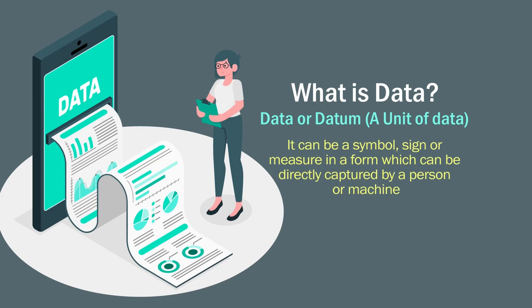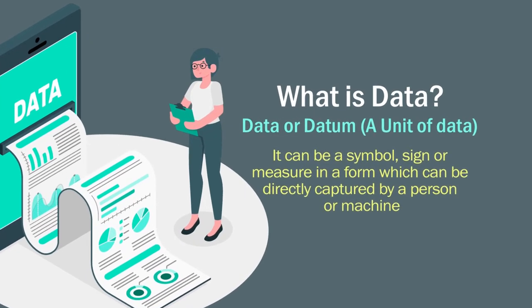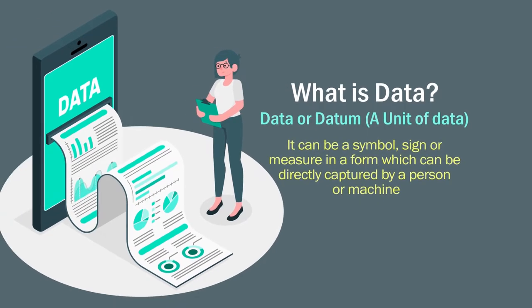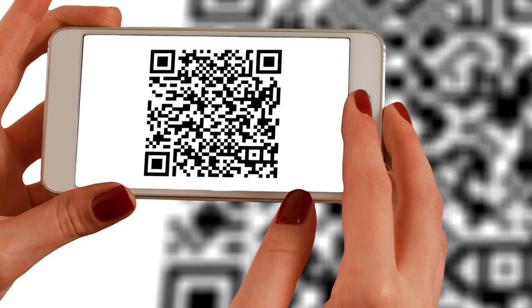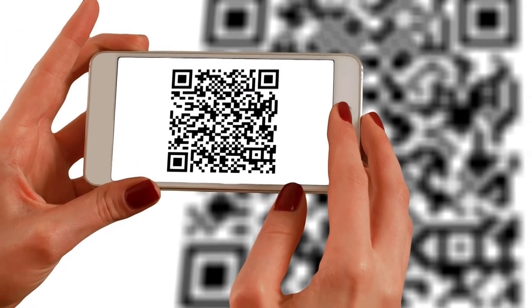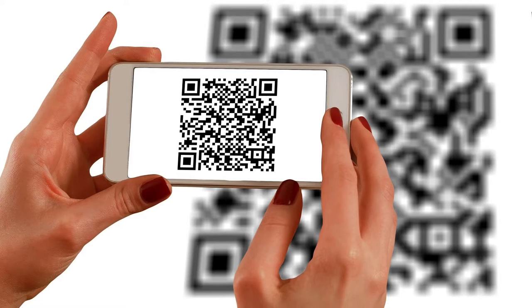Data can be a symbol, sign, or measure in a form which can be directly captured by a person or maybe a machine. For example, alphabets and numbers — and these days you are dealing with QR codes; you are just scanning. You scan the QR code and the numbers automatically come onto your screen. That is data in the form of a QR code. We also have optical character recognition, MICR recognition in bank checks, and shopping malls automatically scanning barcodes. So barcode is data and the scanner reads that particular data.